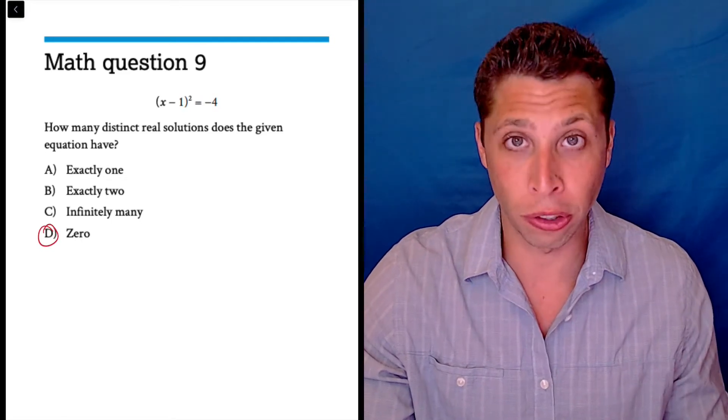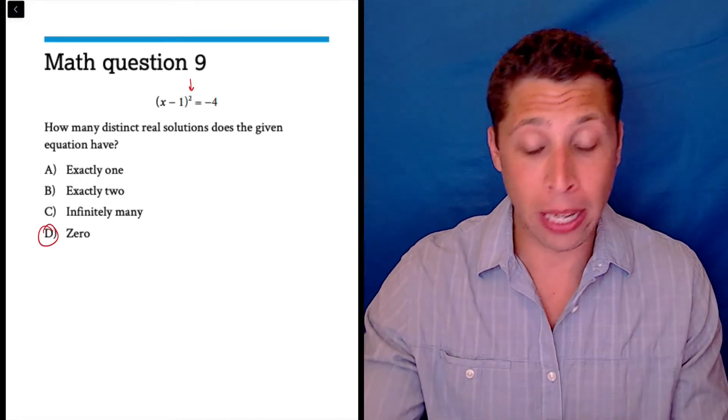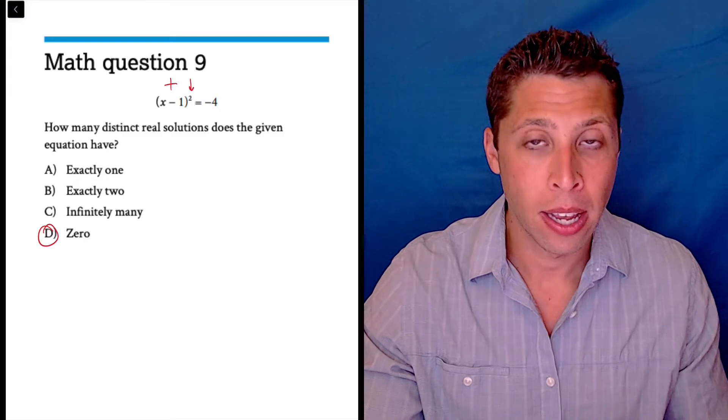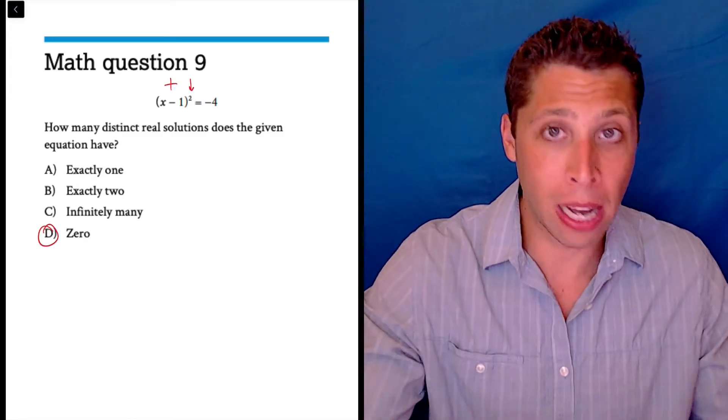The number of real solutions for this is zero because if we square something, no matter what it is, it's going to become positive. So the left side of this equation has to be positive because even if it's a negative number in those parentheses, it gets squared, it becomes positive.